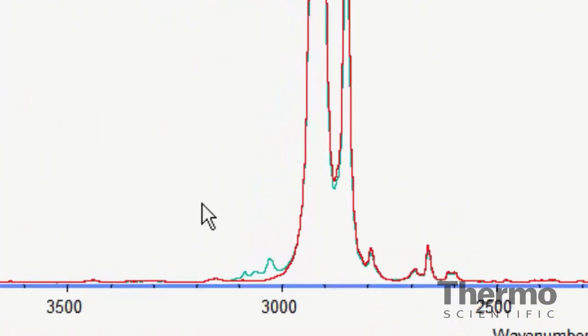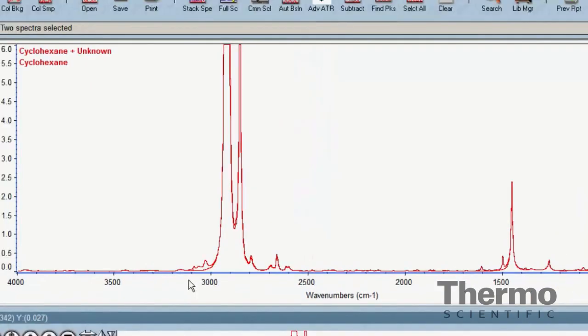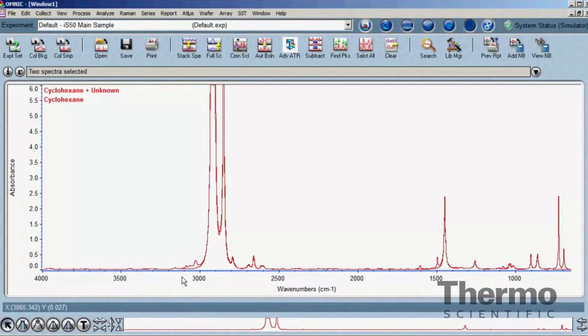The two spectra need to be selected in the Omnic window by clicking on the mixture spectrum first, and while holding the control key, click on the reference spectrum. The two datasets will then be selected in the correct order. The title bar will read two spectra selected, and the subtraction process can proceed.